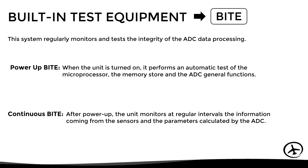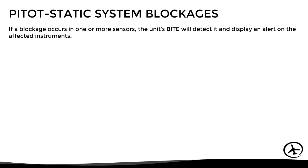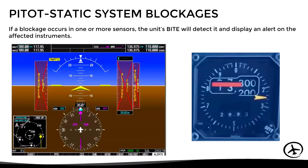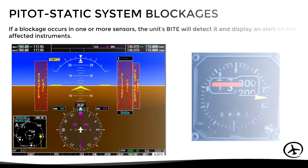As seen in previous videos, pitot-static sensors can get blocked. If a blockage occurs in one or more sensors, the unit's built-in test equipment will detect it and display an alert on the affected instruments. In the image on the left, two red crosses indicate that the airspeed indicator, altimeter, and vertical speed indicator are inoperative, which may be due to a static port blockage. On analog instruments connected to the ADC, a red flag will appear indicating the instrument must not be used.